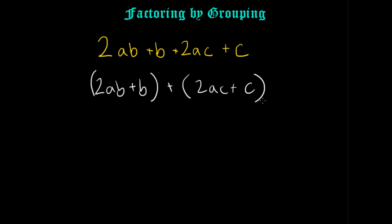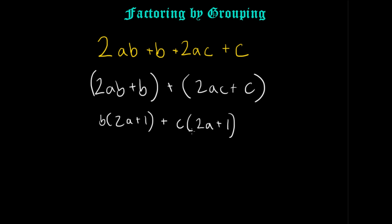Now in each one of these groups, you can find like terms. On the left, we have 2AB plus B — we can factor a B out of that, giving us B times (2A plus 1). And on the right, we can factor a C out and also get (2A plus 1). Now look what we have — we have (2A plus 1) on both the left and the right. We can factor that out as well, because it's a common term.